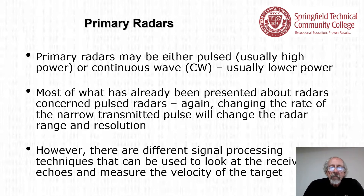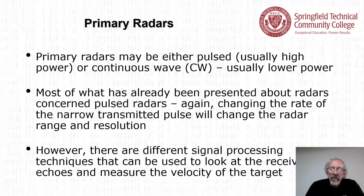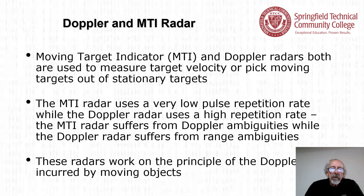Primary radars may be either pulsed — usually high power — or continuous wave, CW, usually lower power. Changing the rate of the narrow transmitted pulse changes the radar range and resolution. However, different signal processing techniques can be used to measure the velocity of the target. Let's talk about Doppler and MTI radar.